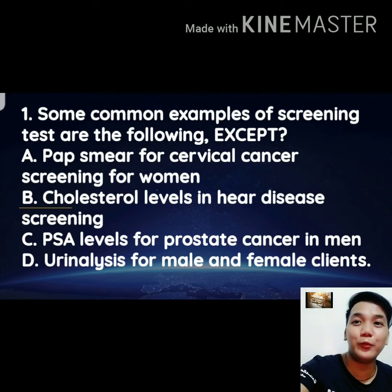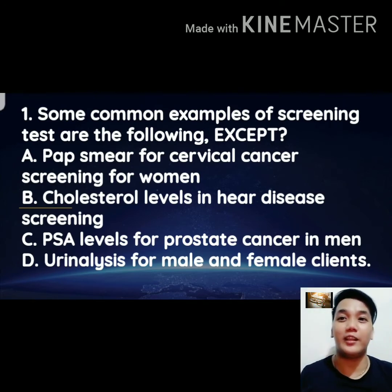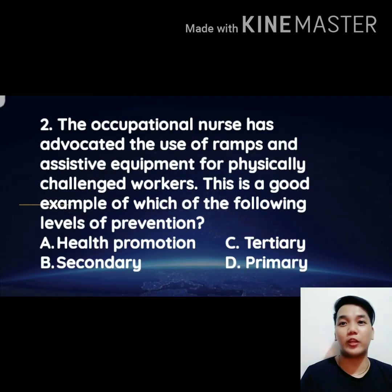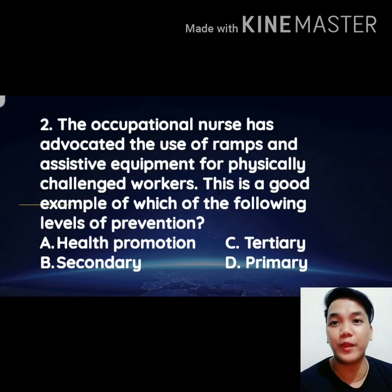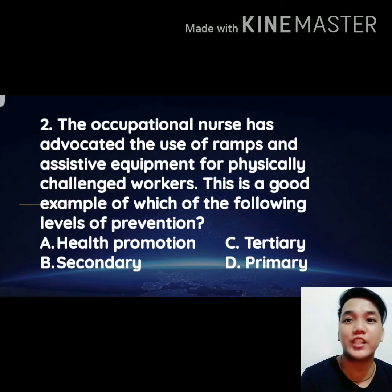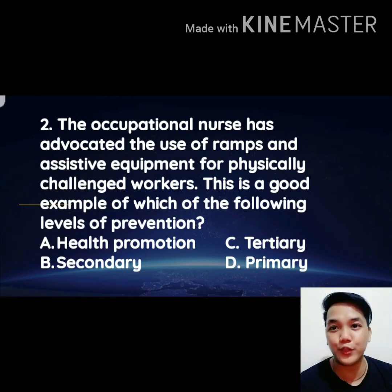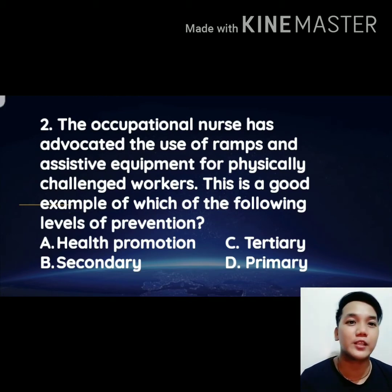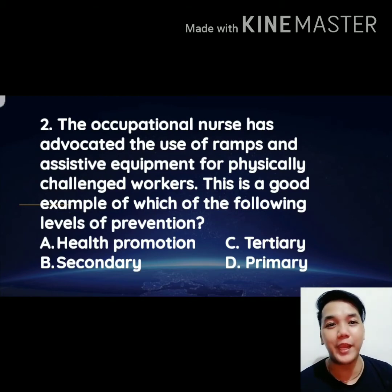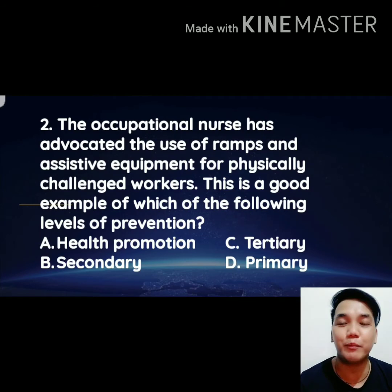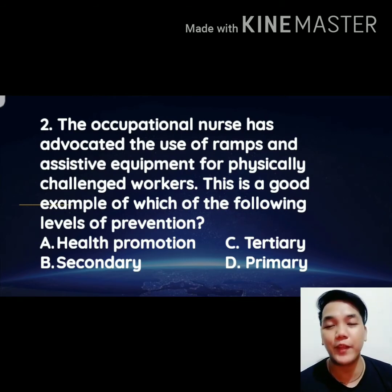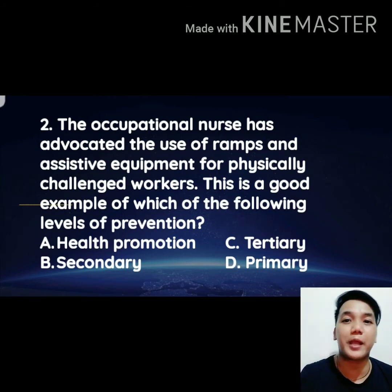Number two: an occupational nurse has advocated the use of ramps and assistive equipment for physically challenged workers. This is a good example of which of the following levels of prevention? A) health promotion, B) secondary prevention, C) tertiary prevention, or D) primary prevention.